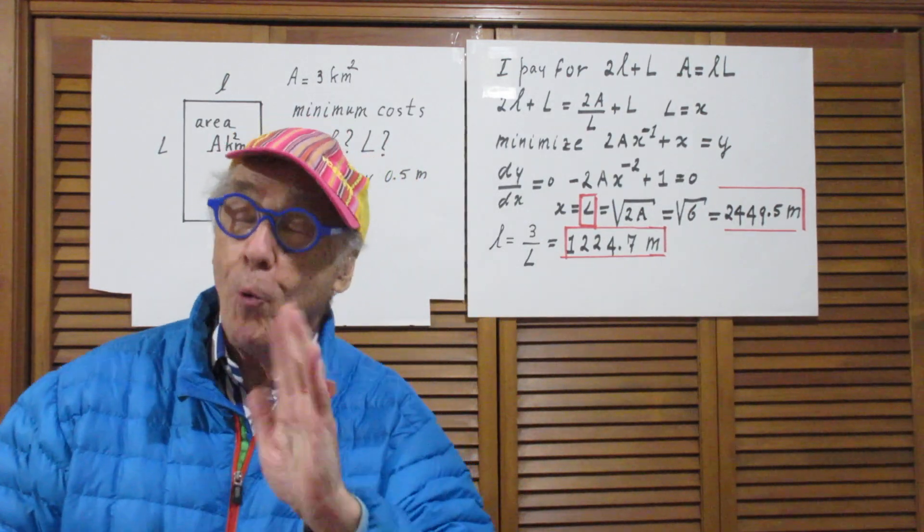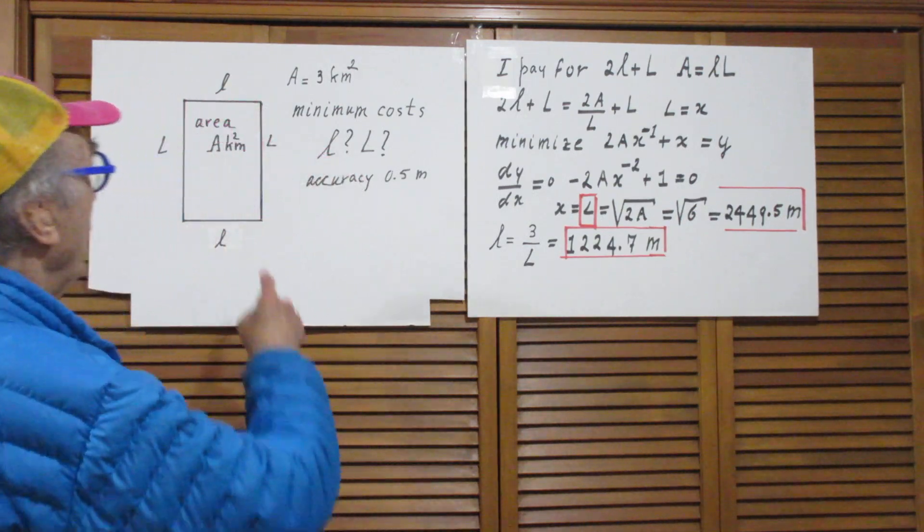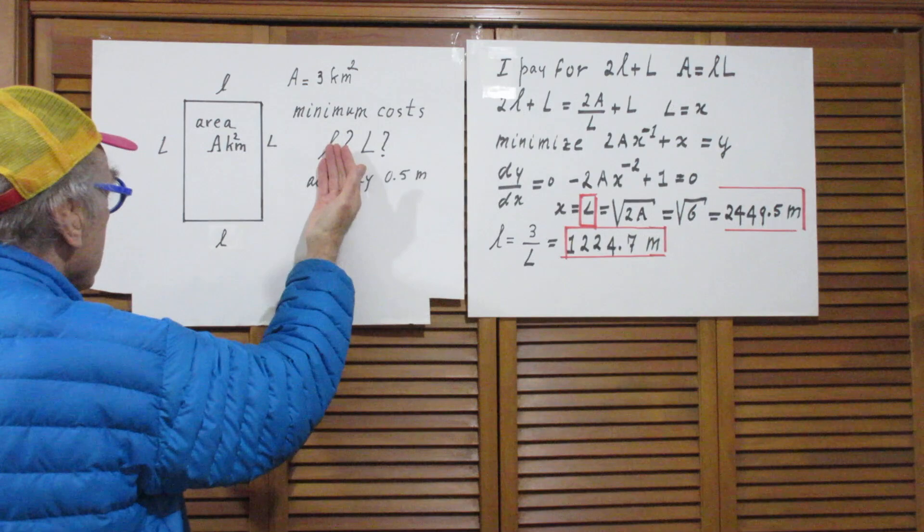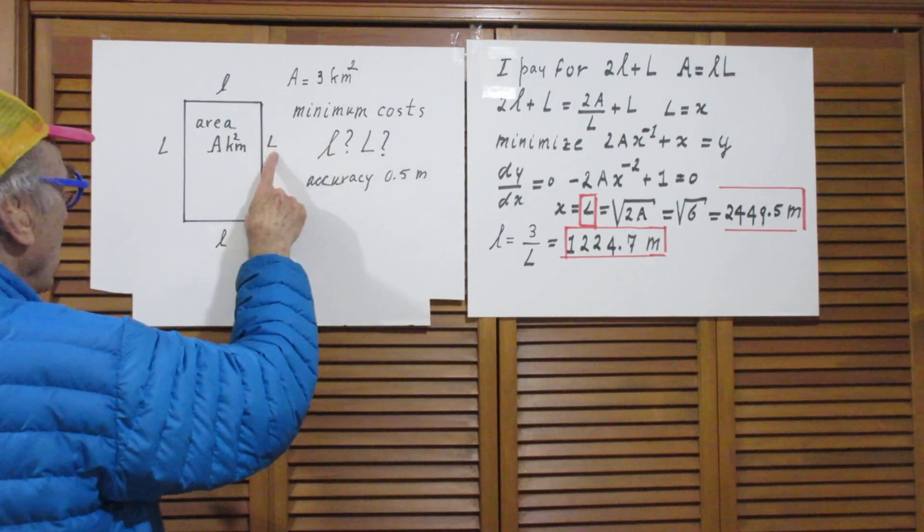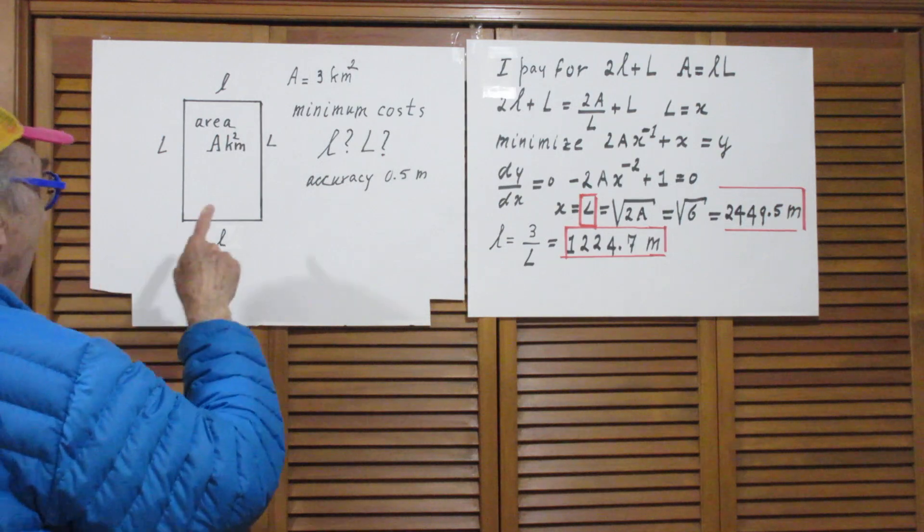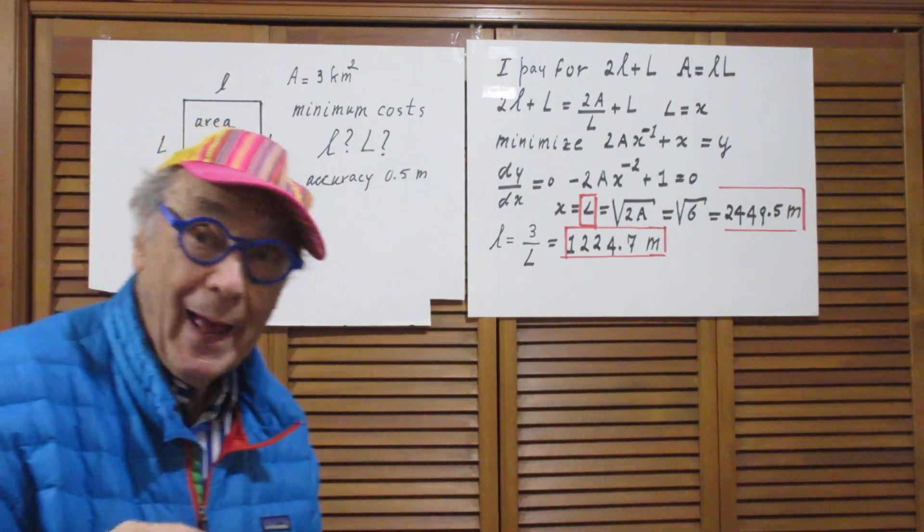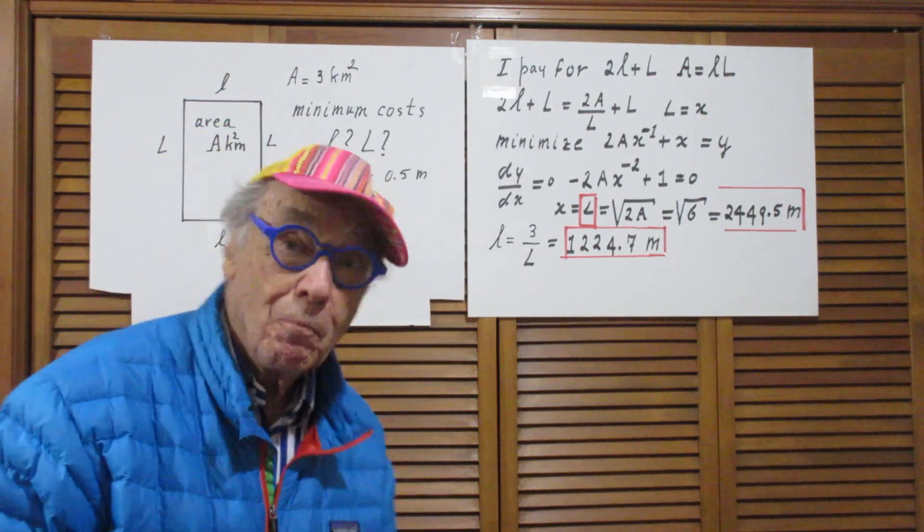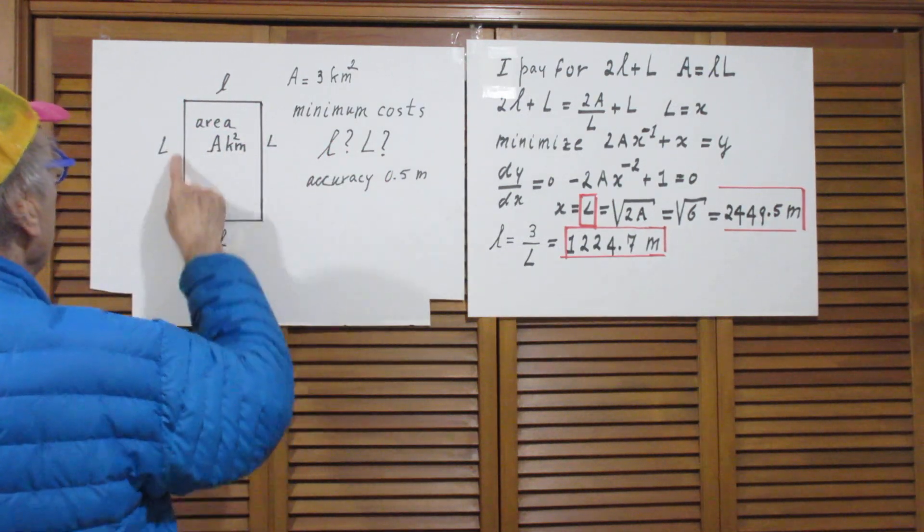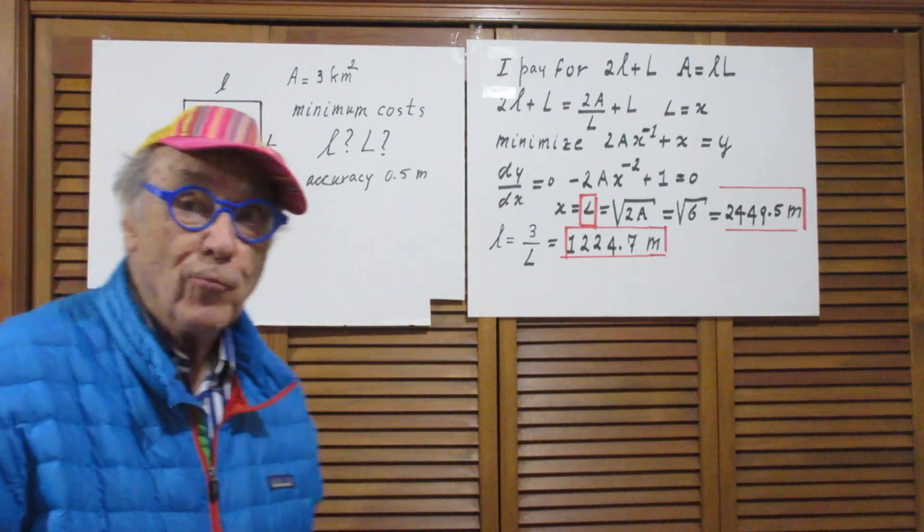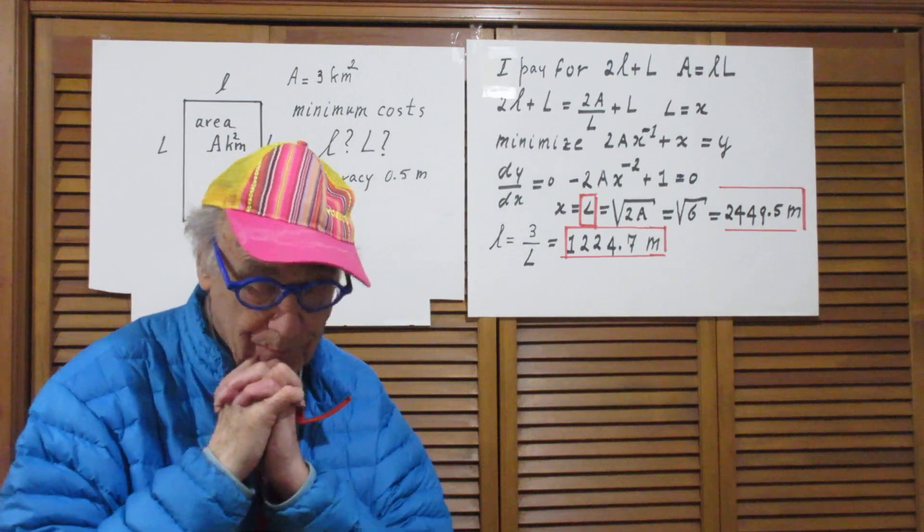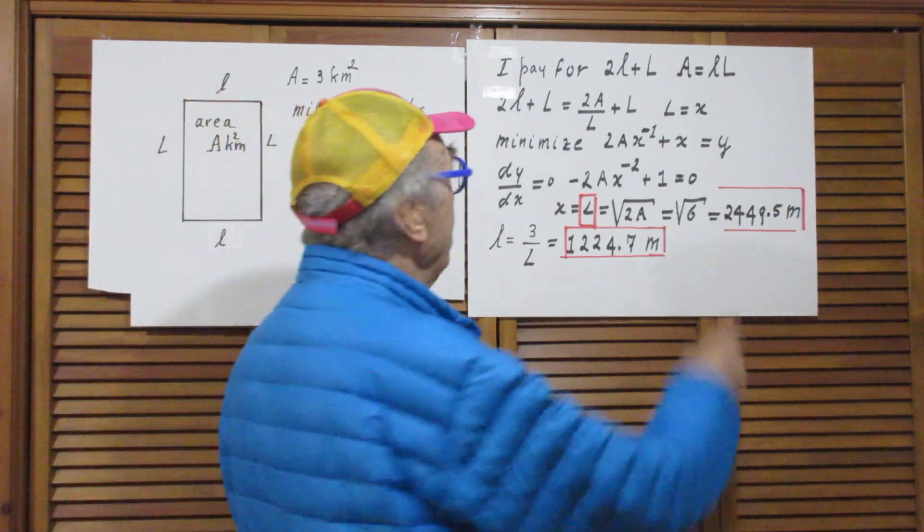But also by law, my neighbor has to pay one side. So this is where my neighbor is, I call that side capital L and this small l. I want to pay as little as possible. I have to pay for this side, this side, and that side, so I want to minimize that size. So I pay for 2l + L.